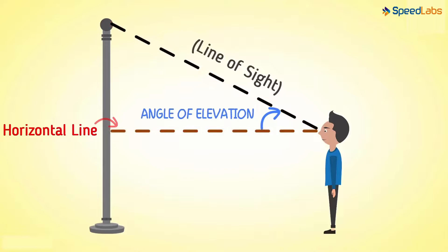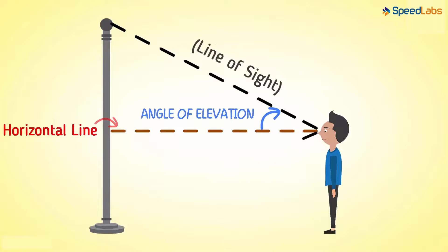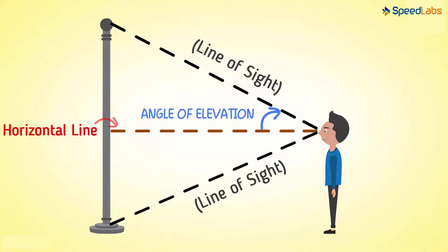What if the person is looking at the base of the pole? What is the line of sight in this case? The line drawn from the eye to the base of the pole is the line of sight when the person is looking at the base. In this case, the angle formed between the line of sight and horizontal is called the angle of depression.